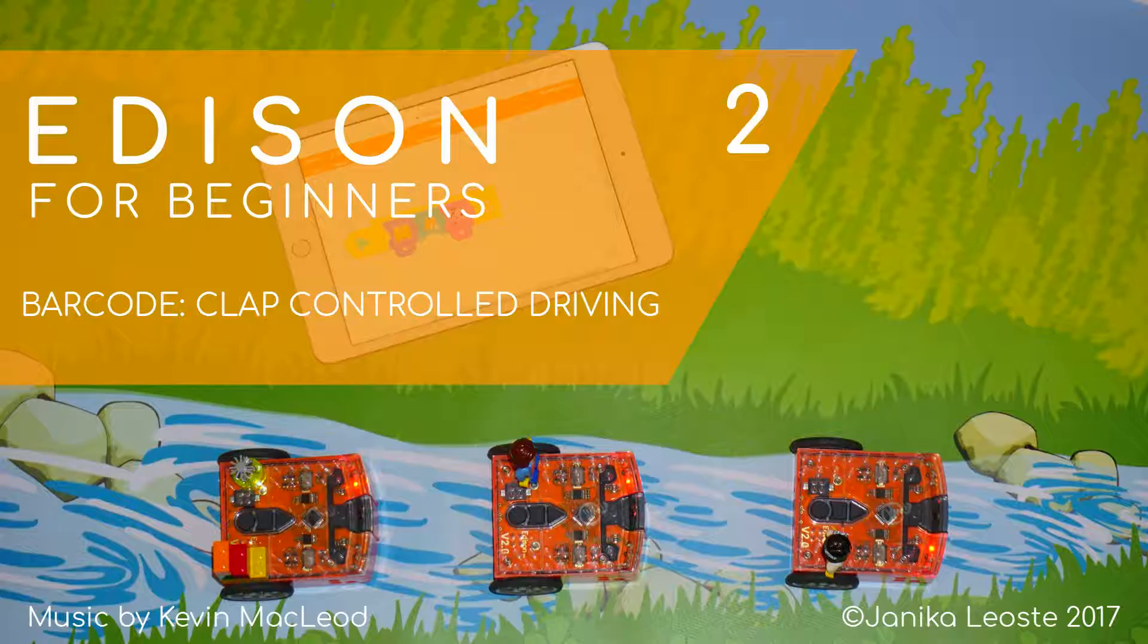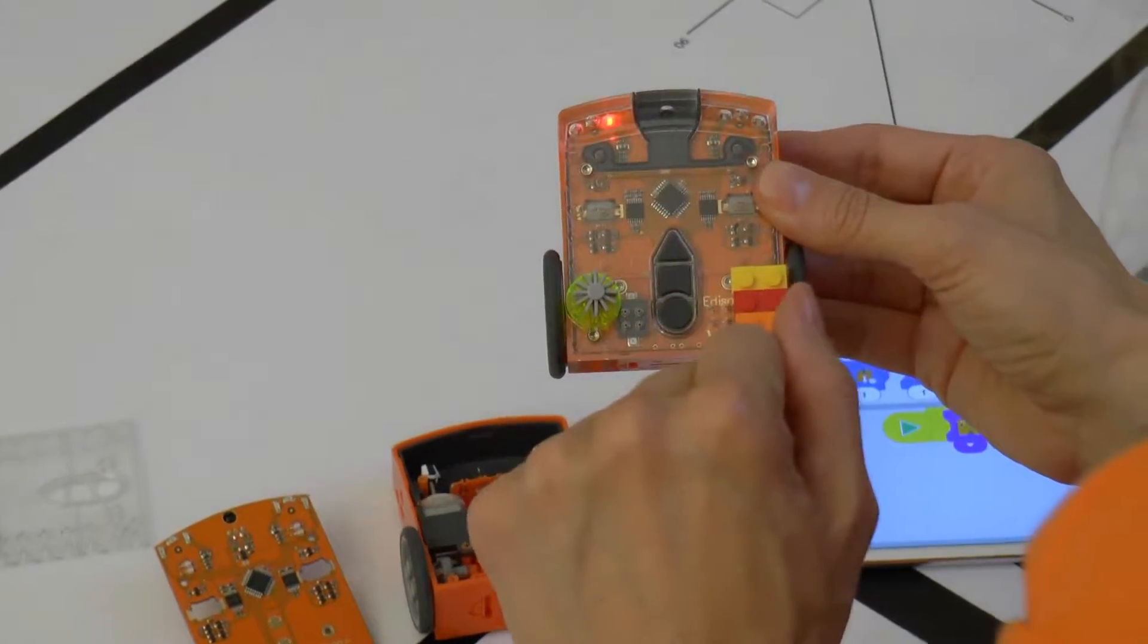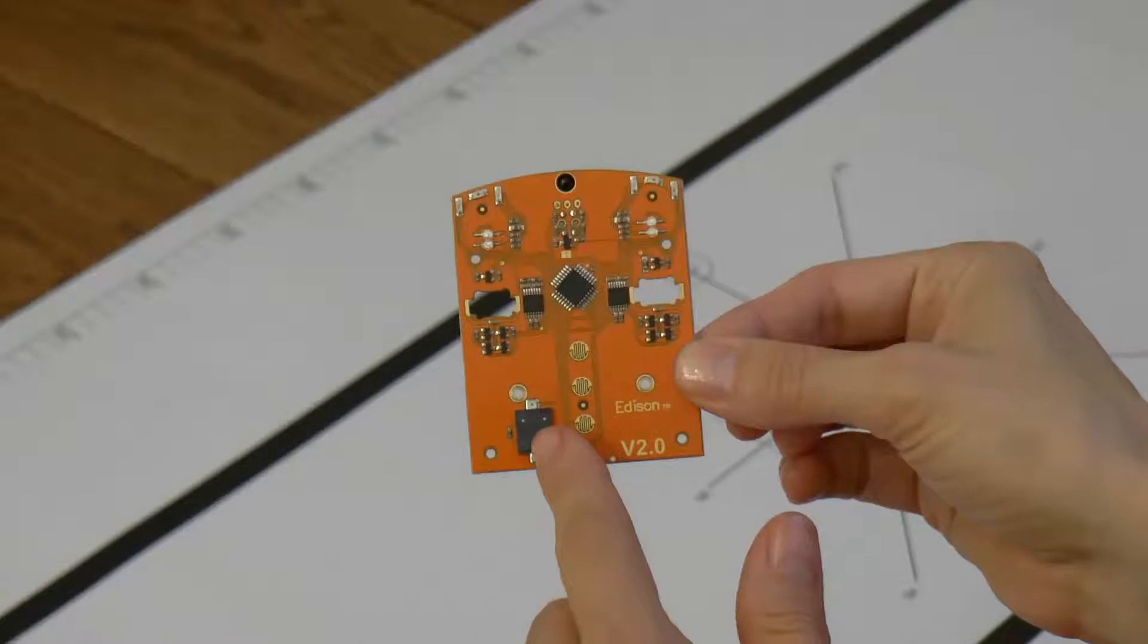Clap control driving. In the last video we learned the control buttons of Edison, found out how it perceives the world and what it can do.